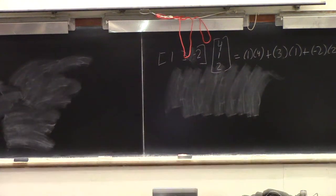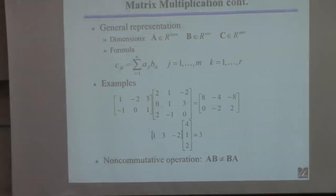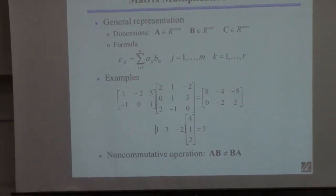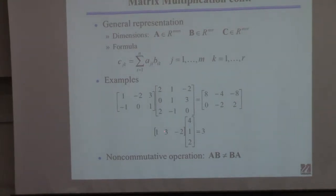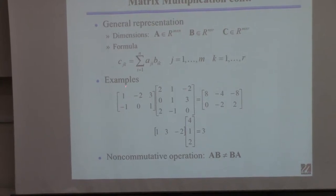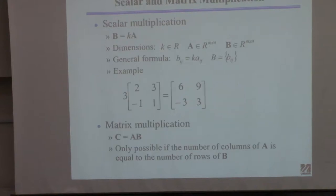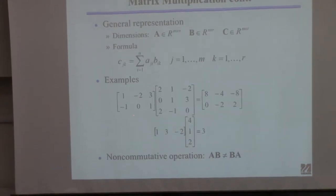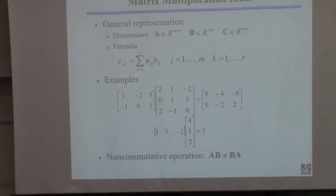Now for this matrix problem — let's say I want to multiply this matrix times this matrix. First, determine: is it possible? This matrix has to have the same number of columns — 1, 2, 3 — as the number of rows of B — 1, 2, 3. There are three columns here and three rows there, so you can do it.